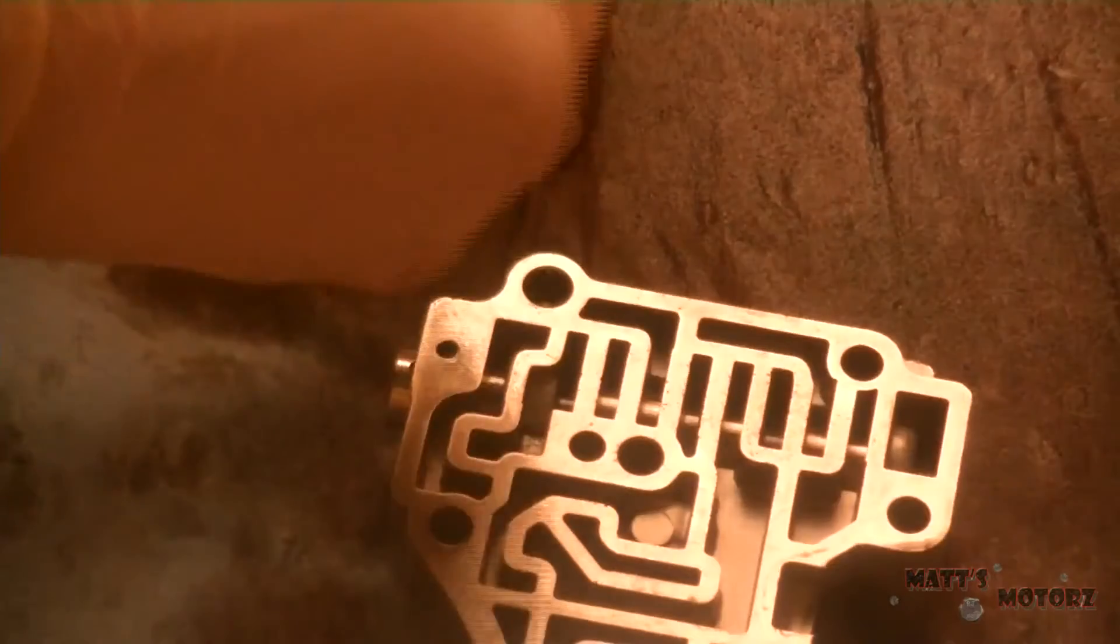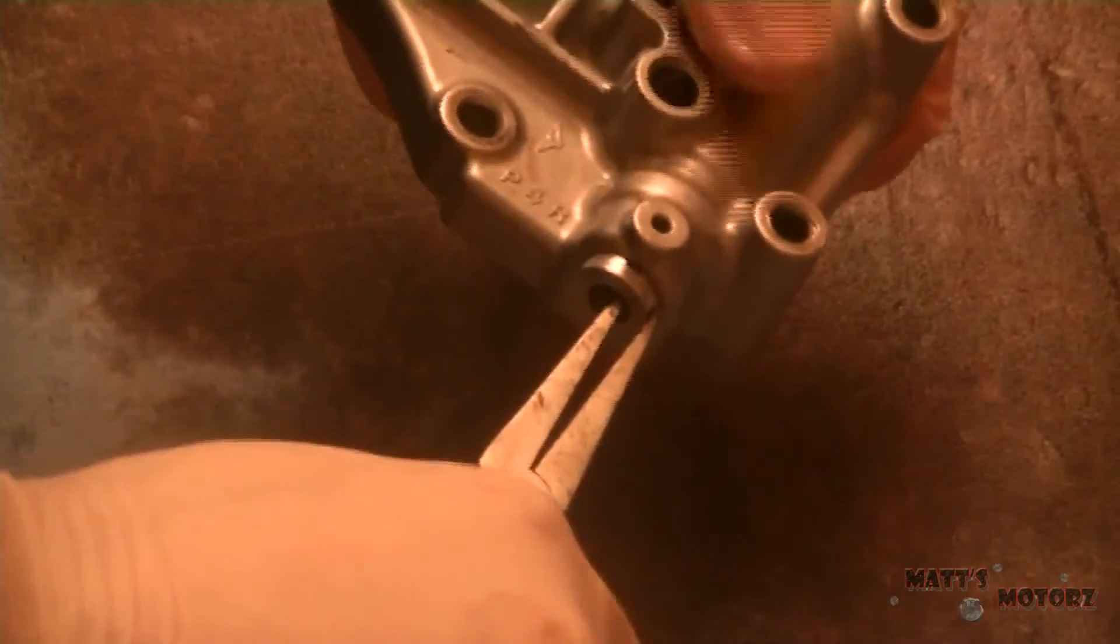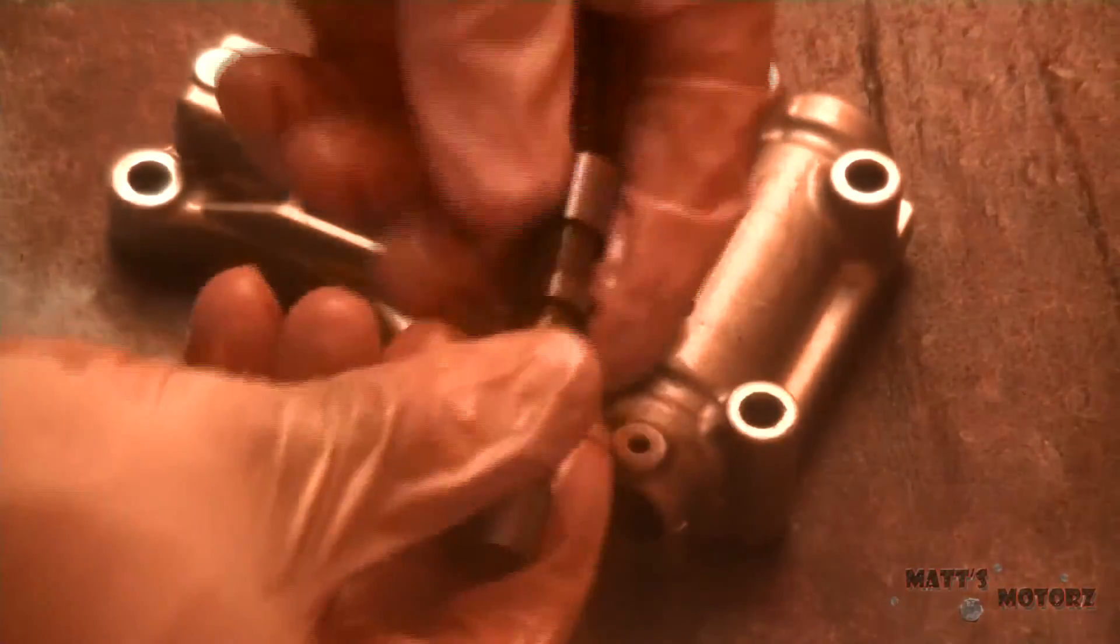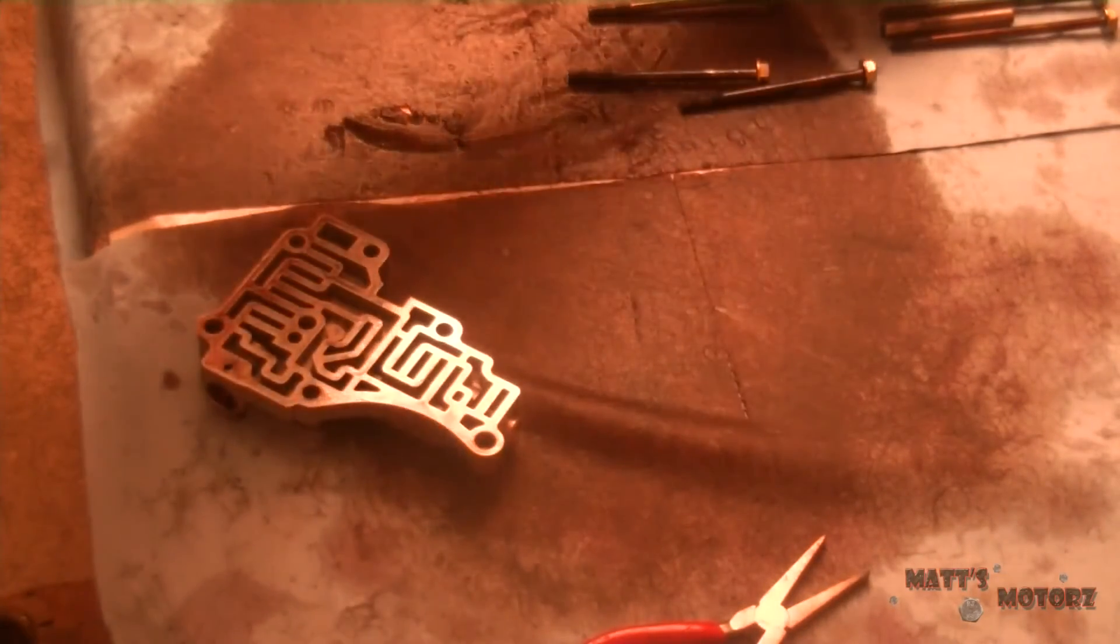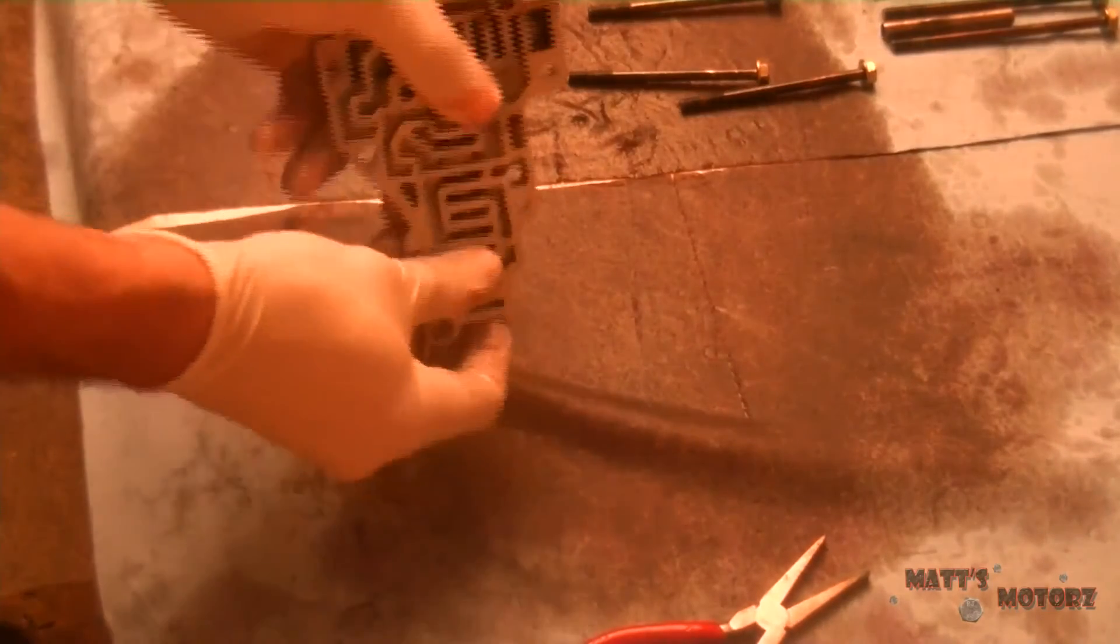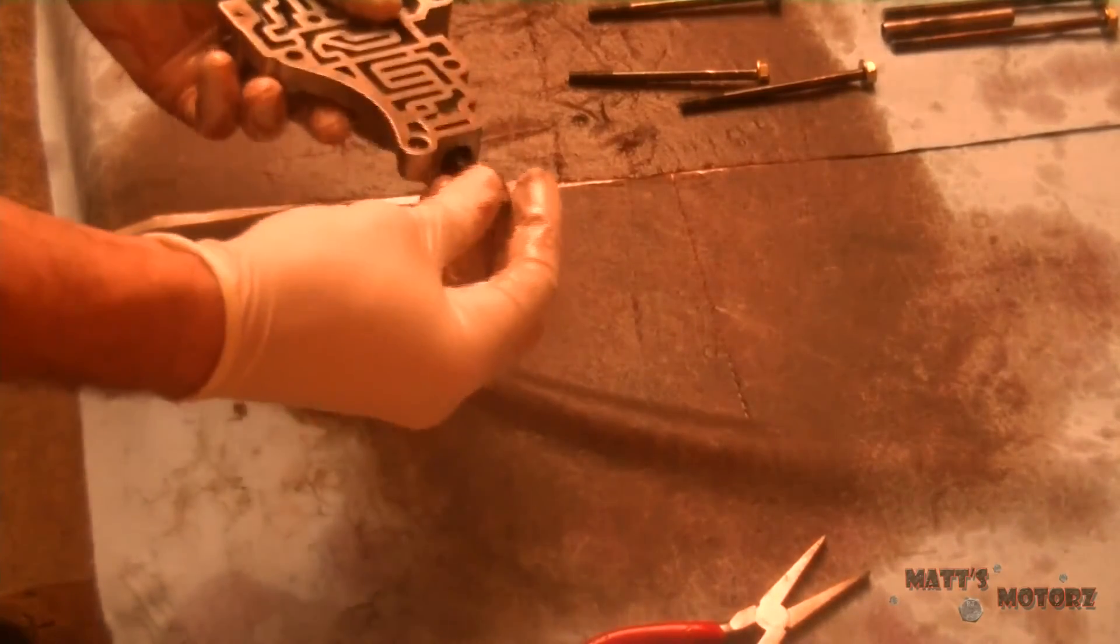This first one is going to be the lockup shift valve. I just hammered that out like before. Pulled it out with pliers. There we go. And then lastly, after this, we have the lockup timing valve. It's held on by that little pin. And it'll come right out.